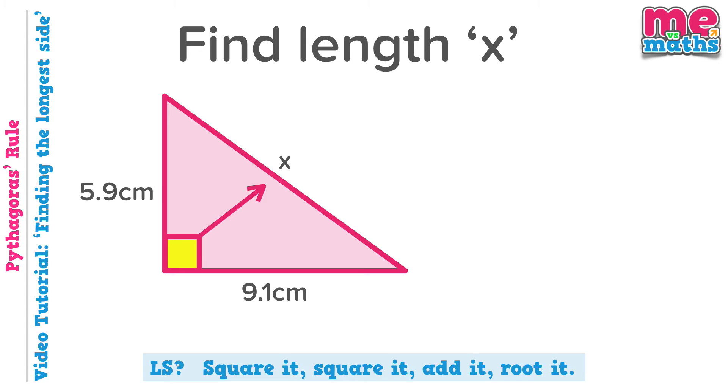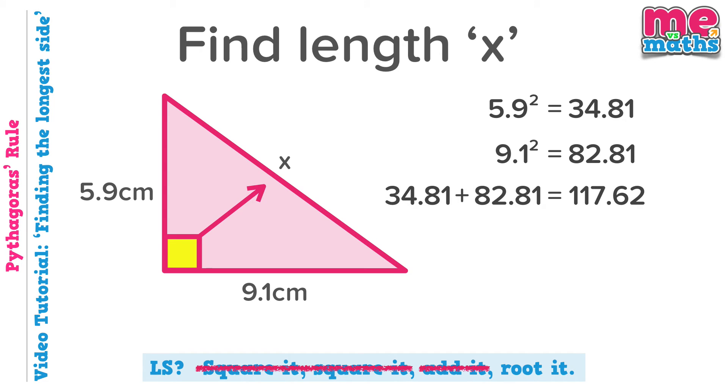So we'll start by squaring both the sides we've been given: 5.9 squared, remember that means 5.9 times 5.9. We'll need a calculator for that, and we want to use the squared button if we can as it just makes our lives a bit easier. So 5.9 squared is 34.81, and 9.1 squared is 82.81. Remember the process we're following, I make no apologies for repeating it again: square it, square it, add it, root it. Right, so we've completed the first two steps, we've squared our two sides, now we need to add them together. That gives us 117.62.